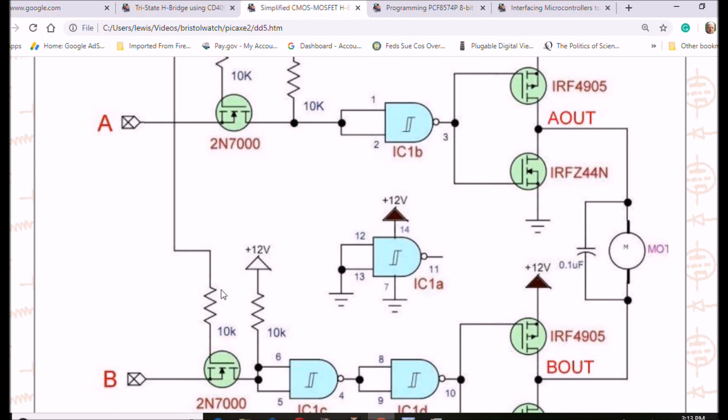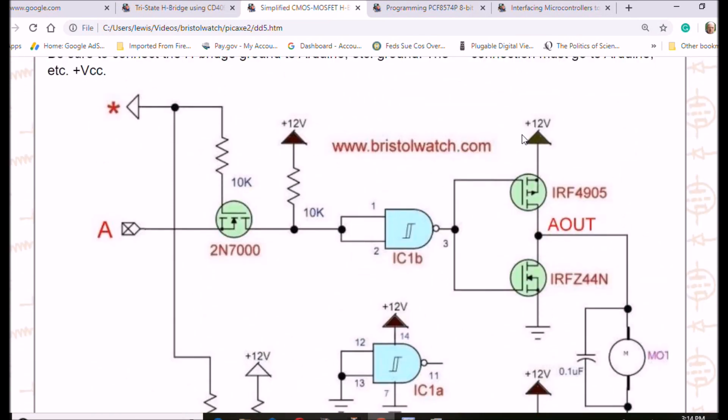Two N-channel MOSFETs or 2N7000 is what I use. And of course, your output circuit is 12 volts. And this ties back into a three or five volt circuit. That's all I can say about this.